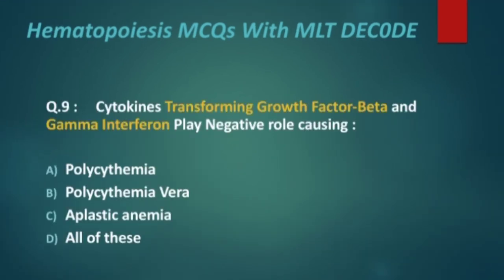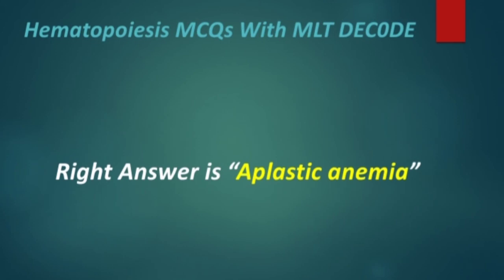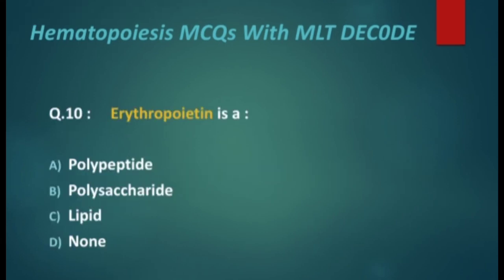Next MCQ: cytokines transforming growth factor beta and gamma interferon play a negative role causing — polycythemia, polycythemia vera, aplastic anemia, or all of these? The right answer is aplastic anemia.